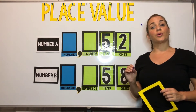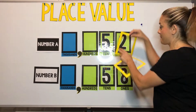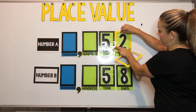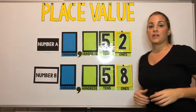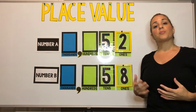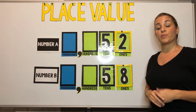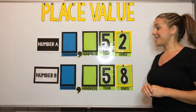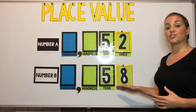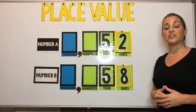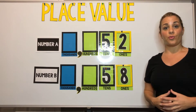These two are different, so we put a frame around them. Whichever number has a greater digit in the ones place — which we have put the frame around — that is going to be the greater number. So 58 is greater than 52 because eight ones are greater than two ones.